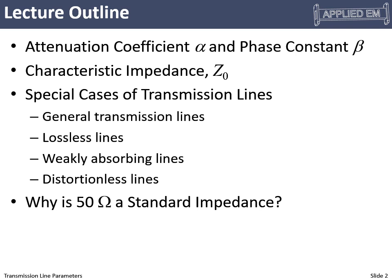In the last video, we derived our transmission line equations — our wave equations for voltage and current — and we solved those. We did all this in terms of the fundamental parameters R, L, G, and C. Here what we'd like to do is derive the more meaningful parameters like attenuation coefficient, phase constant, and impedance. Once we do all that, we'll have the general equations for general transmission lines.